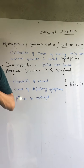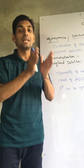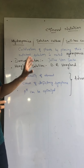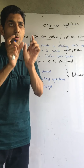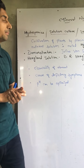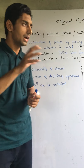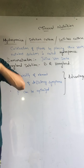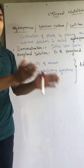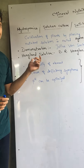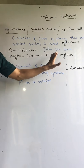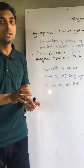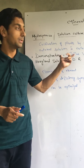What is hydroponics? We call hydroponics 'solution culture' or 'soil-less culture.' That means we will grow plants without soil — we will do cultivation without using soil. It is a technique of cultivation of plants by placing their roots in a nutrient solution. Instead of soil, we use a nutrient solution. That method is called hydroponics.